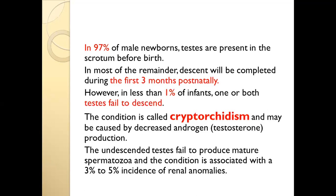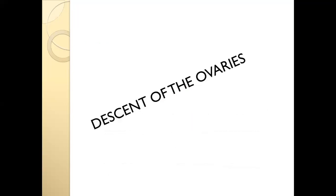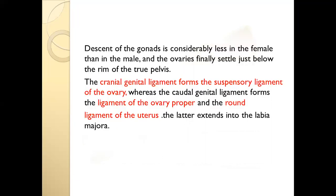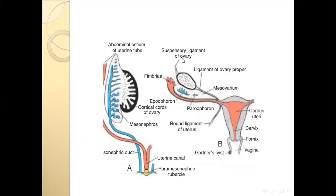The undescended testis must of course be removed if persistent, because if it remains it may undergo malignant transformation. This is one of the most important congenital anomalies of the genital tract. In 3–5% of cases there is no descent. Unlike the testis, the ovary remains just below the rim of the true pelvis. The cranial genital ligament becomes the suspensory ligament of the ovary, and the caudal genital ligament becomes the ligament of the ovary proper and the round ligament.